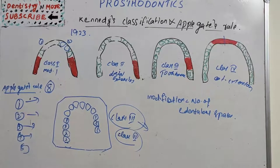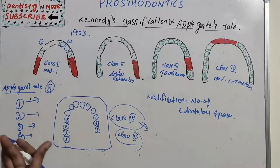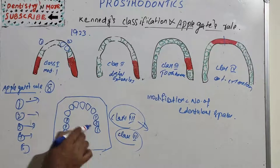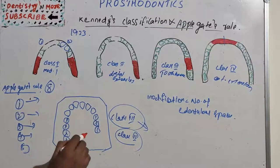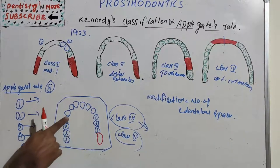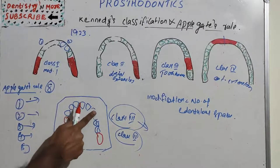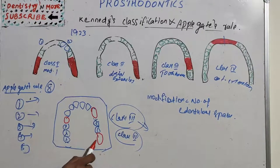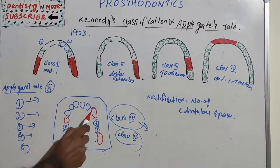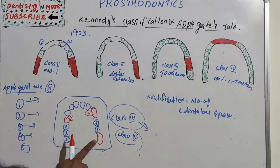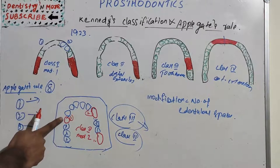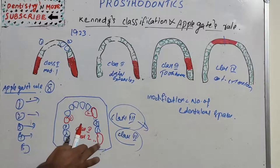Rule number 5: the most posterior edentulous area always determines the classification. For example, if we have a posterior edentulous area on one side, another area, and one more edentulous area further back, we consider only the most posterior one — that would be Class 2 with modification number 2. The other edentulous areas are not what determines the main class.